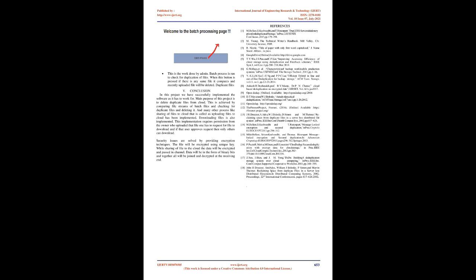In this project we have successfully implemented the software as it has to work. The main purpose of this project is to delete duplicate files from cloud. This is achieved by comparing file streams of batch files, checking for duplicate files, and deleting them. Many other processes like sharing files to cloud (uploading) and downloading files have also been implemented. Downloading requires permission from the owner who uploaded the file; one has to request the file to download, and if that user approves the request, then only others can download. Security issues are solved by providing encryption techniques. The file will be encrypted using a unique key, and while sharing the file to cloud, the data will be encrypted and passed through the channel. Data will be in the form of binary bits, and together all will be joined and decrypted at the receiving end.